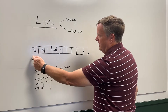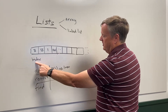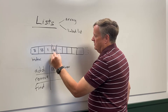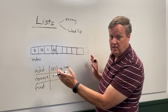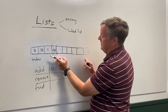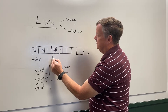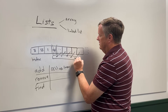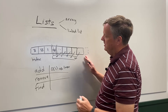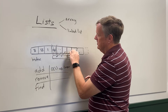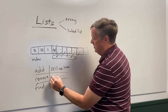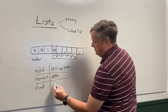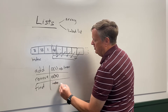For removing from an array, first I need to figure out where the element is — I either have an index or I have to find it. Then I need to remove it. Since all memory has to be contiguous, I have no choice but to take everything after that element and shift it down. Because I have to shift everything, I have to visit every single one of those elements once, making it a linear operation — O(n).